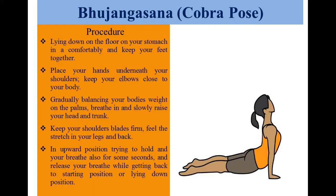Bhujangasana, called Cobra Pose. Procedure: Lie down on the floor on your stomach comfortably and keep your feet together. Place your hands underneath your shoulders and keep your elbows close to the body. Gradually balance your body's weight on the palms. Breathe in and slowly raise your head and trunk up. Keep your shoulder blades firm and feel the stretch in your legs and back. In the upward position, try to hold and breathe for some seconds.